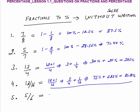5 by 6: this is 1 minus 1/6. 1 is 100%. 1/6 is 16 and 2/3%, as we did in the previous class. So 100 minus 16 is 84, minus 2/3% gives 83 and 1/3% as the final answer.